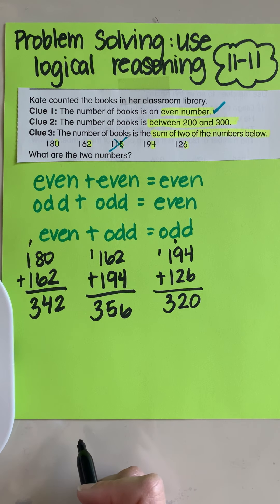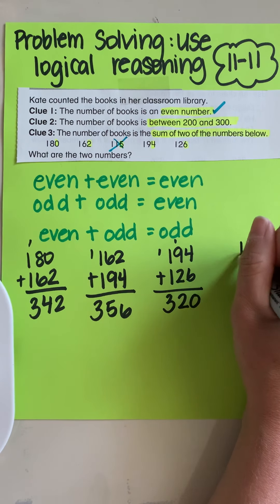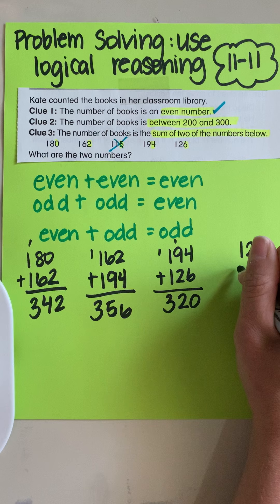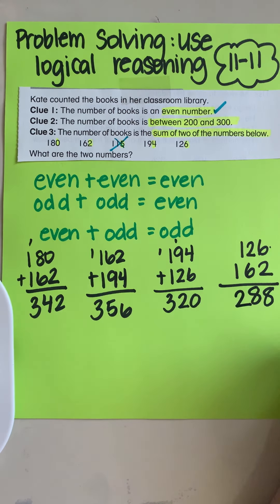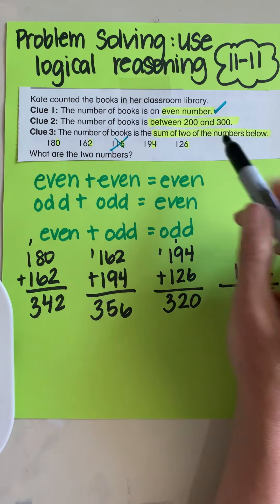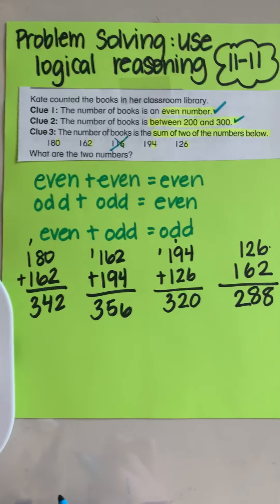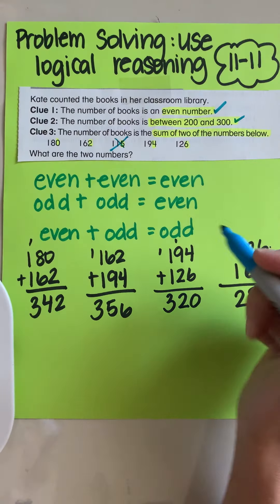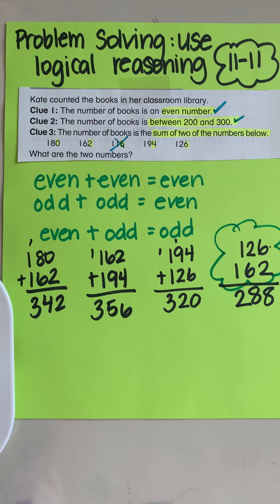I'm going to try the two smallest numbers in here. Let's try 126 and 162. 126, 162. Six plus two is eight. Two plus six is eight. One plus one is two. Is 288 in between 200 and 300? Yes, it is. So my two numbers have to be 126 and 162.